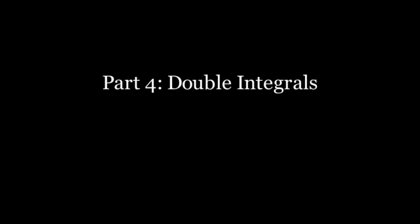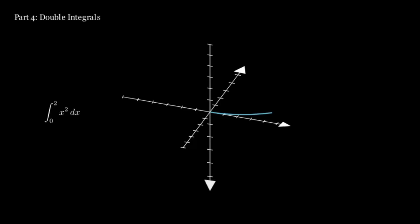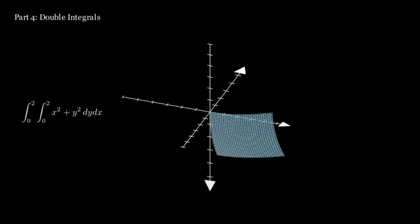Part 4: Double integrals. Just like we defined differentiation, integrals also exist with multivariable functions. When doing a double integral, instead of finding the area under a function, we're finding the volume under it. To do this, first do an integral in the x direction, and then integrate that area a second time over the y direction, effectively extruding it.